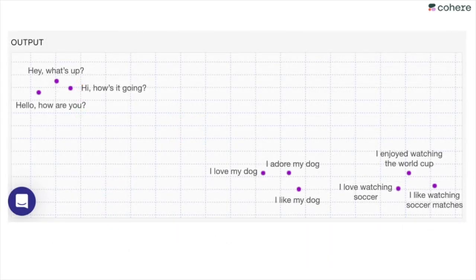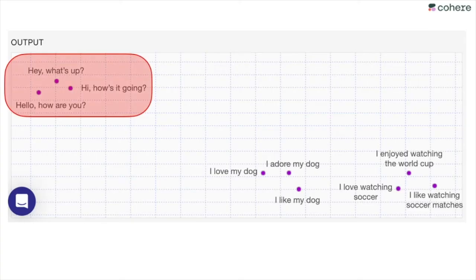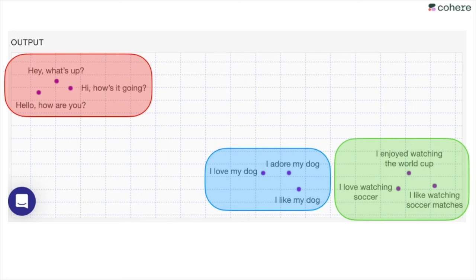You can look at embeddings in the Cohere playground and put some sentences in — because sentences also go into embeddings, not just words. As you can see, all the sentences that greet somebody are clustered together, the sentences about loving your dog are grouped here, and the sentences about enjoying watching soccer are over here. So an embedding brings text into numbers, and the numbers are similar if the text is similar — even if the two pieces of text have no words in common, the embedding will place them close together.